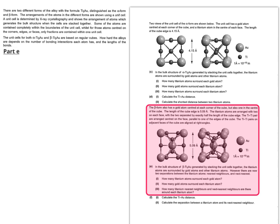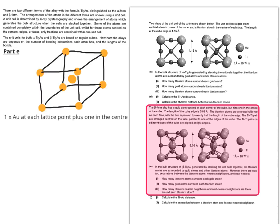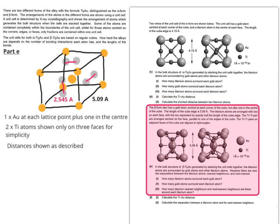Moving on to part E, it has a slightly more complex form of the titanium gold alloy where the titaniums are a bit more densely packed within the unit cell. It has a gold atom centred each corner of the cube—a gold atom at each lattice point—but also one in the middle, and this time the cube is a bit bigger to accommodate this. The titanium atoms are arranged with two on each face, with the two separated by exactly half the length of the cube edge. I've put two titanium atoms shown only on three faces for simplicity, and the distances as described.